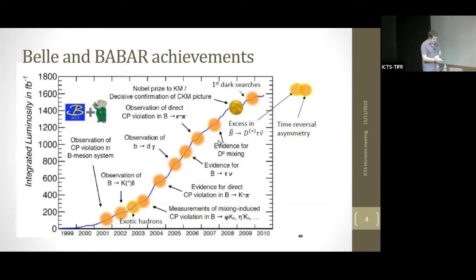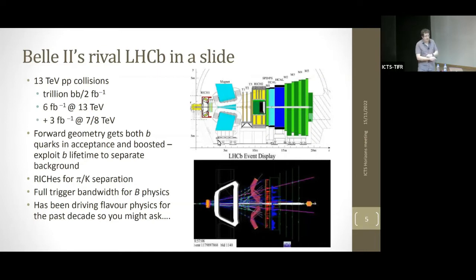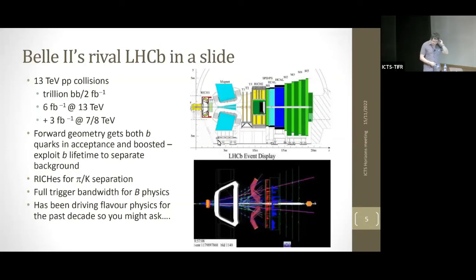That program finished in 2010, so in the last decade flavor physics has moved elsewhere. The current leader is LHCb, which has been running successfully since the start of the LHC, exploiting the very large cross section for BB̄ production in proton-proton collisions. This leads to trillions of BB̄ events — they've collected nine inverse femtobarns of data — using a forward geometry with displaced vertex reconstruction, excellent PID detectors, and now running with 40 MHz readout.